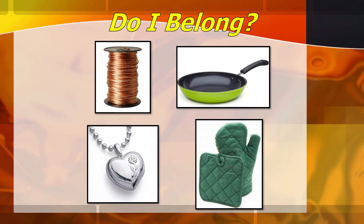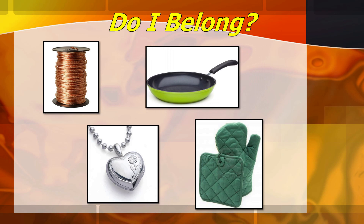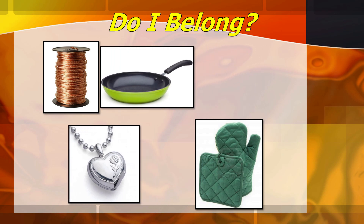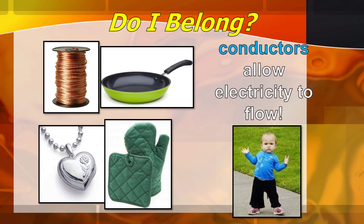I have here four sets of pictures to analyze: a copper wire, a pan, a pendant, and mittens. Which of the four doesn't belong to the group? If your answer is the kitchen mittens, you are correct. Because the other three — the copper wire, the pan, and the pendant — are known to be conductors. Conductors are materials that allow electricity to flow.